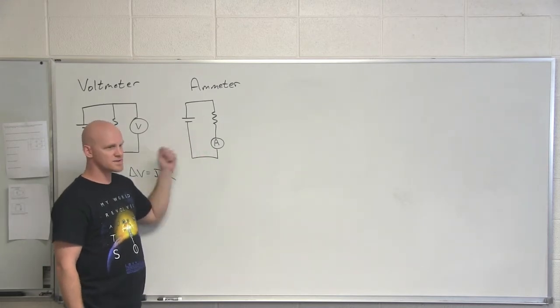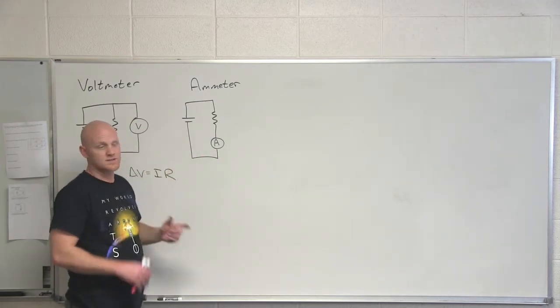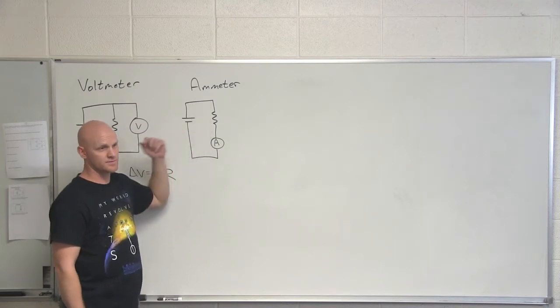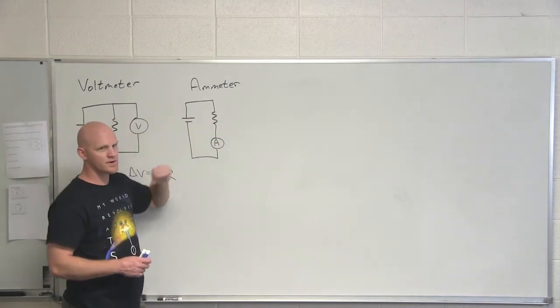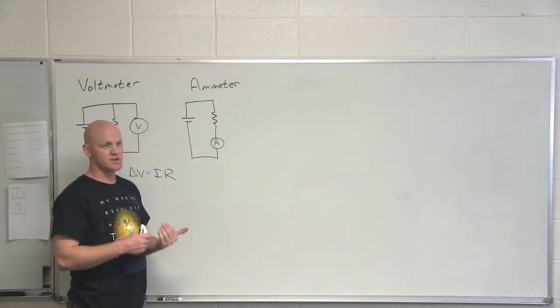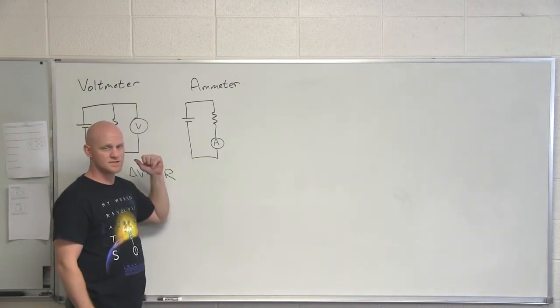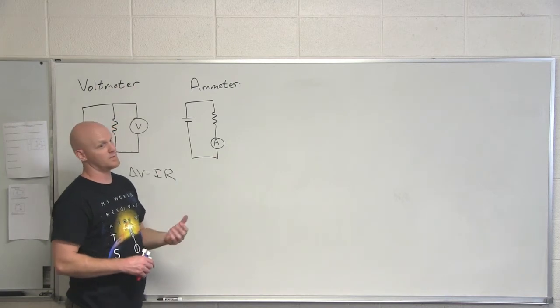Same. The current. So any current flowing through the ammeter is the current flowing through the resistor. But again, I don't want to change the overall current flowing through my circuit here in any appreciable way. So what do I want to be true about the resistance of my ammeter? I want it to be really small.